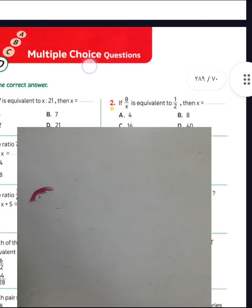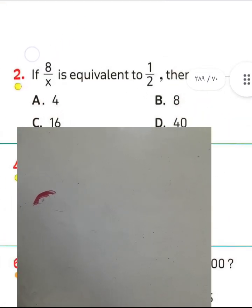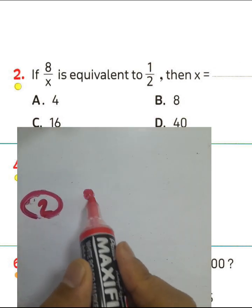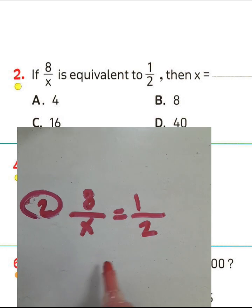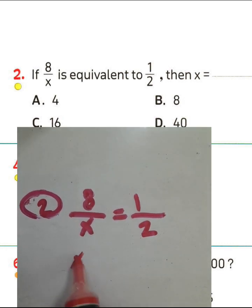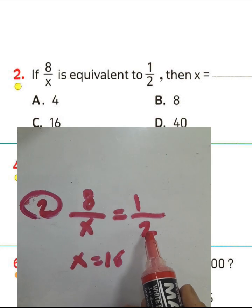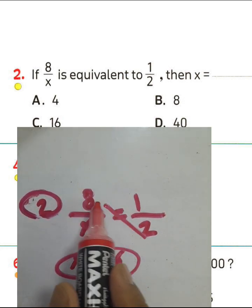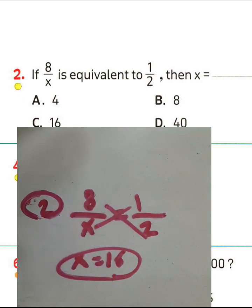Next, question number 2: if 8 over x is equivalent to 1 over 2, then the value of x equals 16. Because 1 half of 2, and 8 is half of 16, or 2 times 8 divided by 1 equals 16.